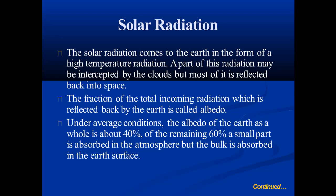A part of this radiation may be intercepted by clouds, but most of it is reflected back into space. Under average conditions, the albedo of the earth as a whole is about 40 percent. Of the remaining 60 percent, a small part is absorbed in the atmosphere but the bulk is absorbed at the earth's surface.